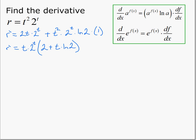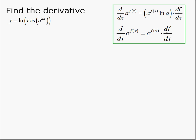In our next example, we have the natural log of the cosine of e to the 2x. The base is a constant and the exponent is a function, so we're going to use this rule here.